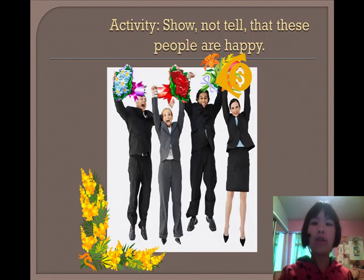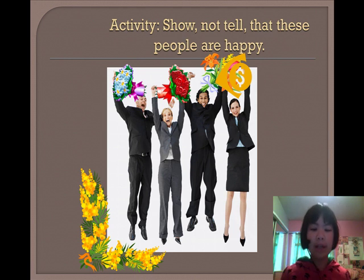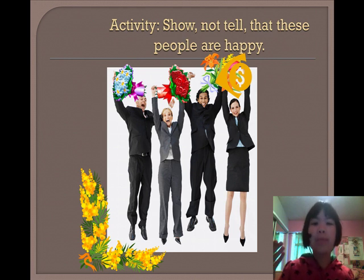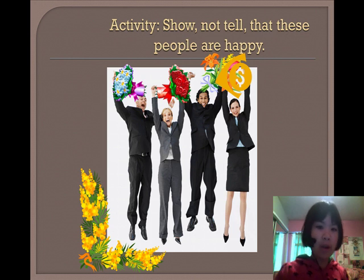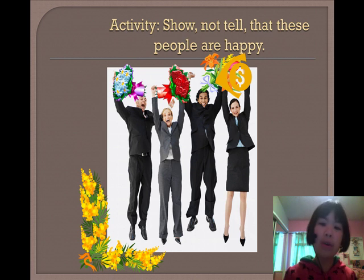So, how could we show-not-tell that these people are happy? You can pause for some time to think about it. Glad to see that you're back. Let's have a look at some body language. Well, they're standing up on their tippy toes, holding their arms up. See big smiles plastered on their faces. Their eyes are wide. What are they holding? Bouquets of flowers. A big dollar sign. So, this is possibly a corporate event — maybe they've raced in some big profits. They look like they're shouting in glee, jumping up and down.